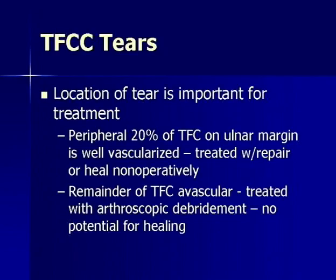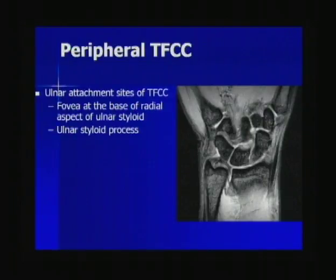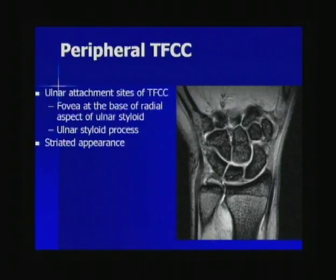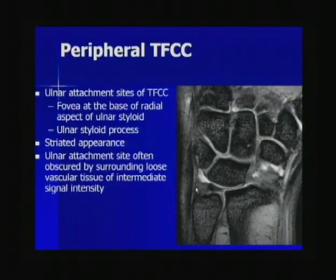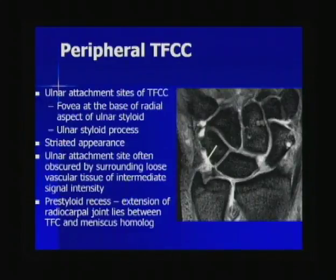The location of a tear in the TFC is very important for treatment. The peripheral 20% of the TFC on the ulnar margin is well vascularized and is often treated with repair or will heal non-operatively. The remainder is avascular and is often treated with arthroscopic debridement as there is no potential for healing. Peripheral TFCC tears are much more difficult to diagnose than central or radial tears because the ulnar site has two attachment sites — at the fovea and at the ulnar styloid process — it can have a striated appearance, and the attachment site is often obscured by surrounding loose vascular tissue. The pre-styloid recess, an extension of the radiocarpal joint lying between the TFC and meniscus homolog, should not be confused with a tear.